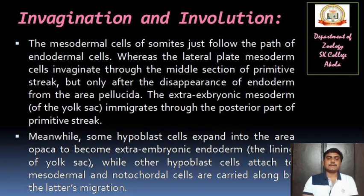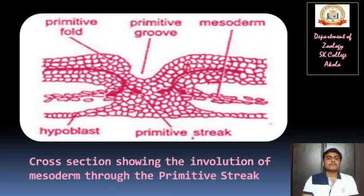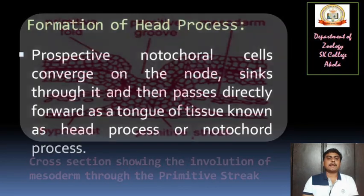While the hypoblast cells attached to mesodermal and notochordal cells are carried along by the lateral migration. This cross-section shows the involution of mesoderm through the primitive streak. You are able to see in the middle there is a groove — we call it the primitive groove — and the embryo is getting its shape in this particular diagram.